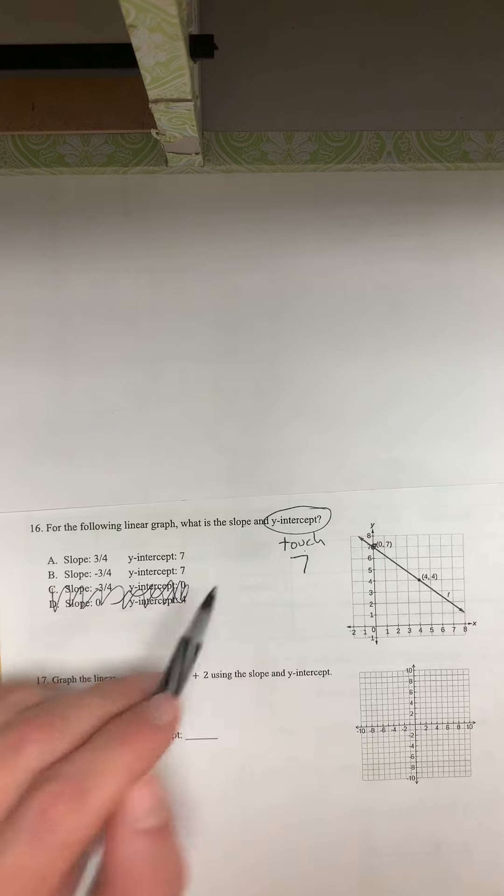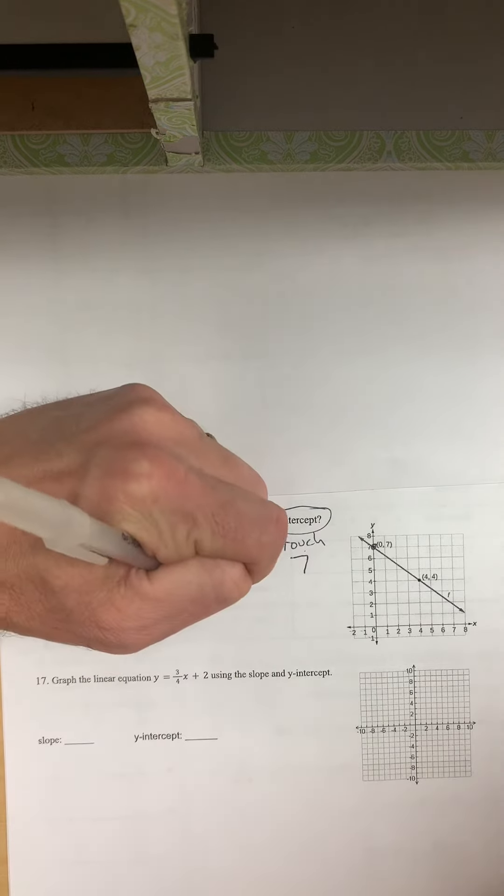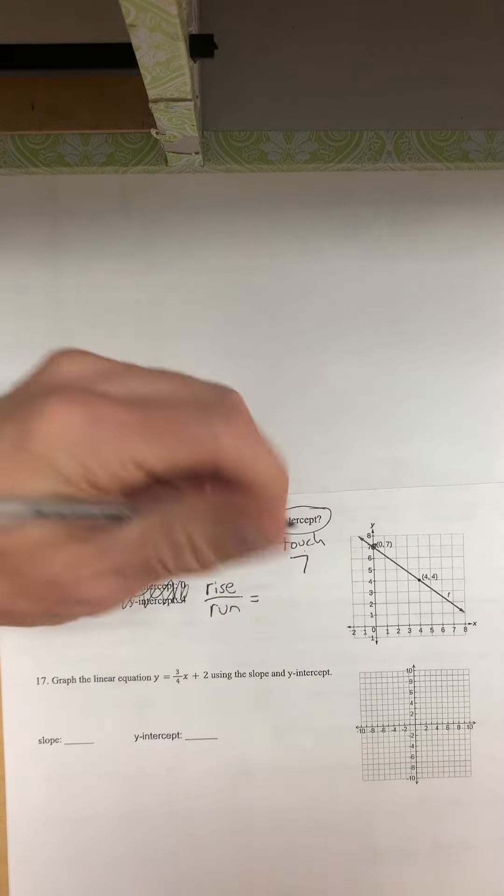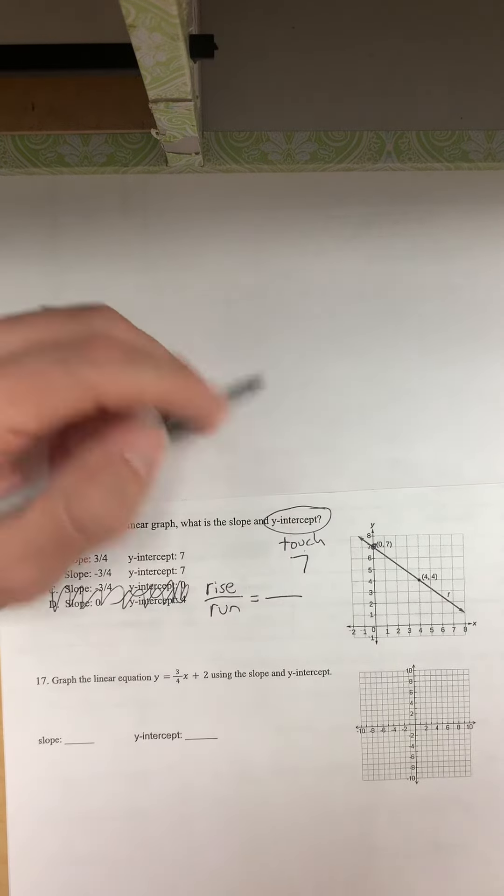So now we want to find the slope. Slope is rise over run. Okay, so let's see what our rise over run is here.